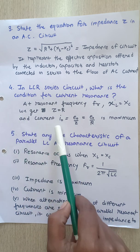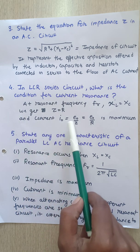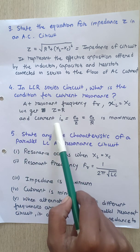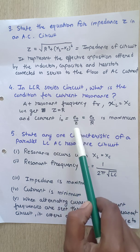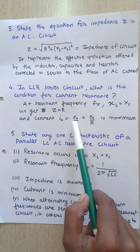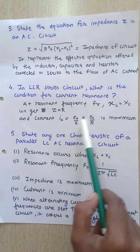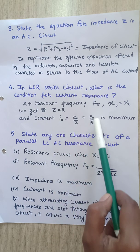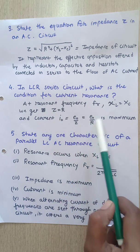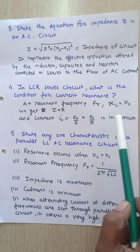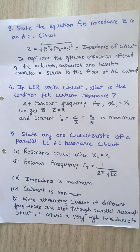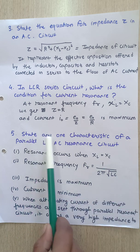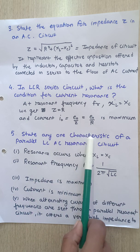At resonance, current I₀ equals EMF E₀ divided by Z, and since Z equals R, I₀ equals E₀/R. This is the maximum current, and that is the condition for current resonance.